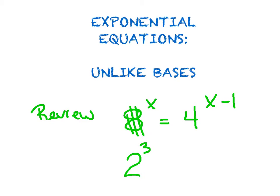So I'm going to kill the 8, replace it with 2 cubed, but I've got to keep that x up there. And I'm going to kill the 4 because I can rewrite that as 2 squared. Those are equivalent, but I didn't get rid of that x minus 1.